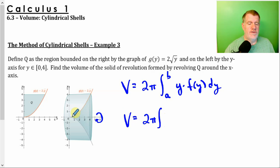All right. The y's go from 0 to 4. So we're taking this shell and rotating that around the x-axis. So we're going to go from 0 to 4. y times f(y), which is 2 roots of y, dy.